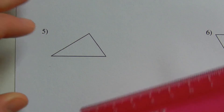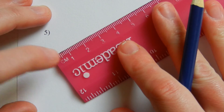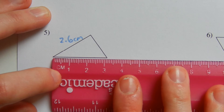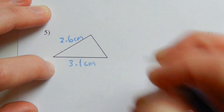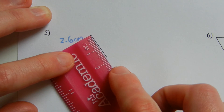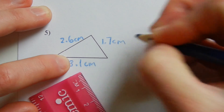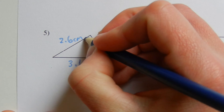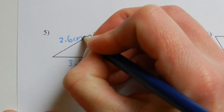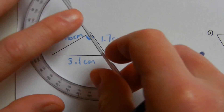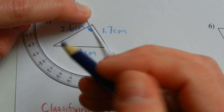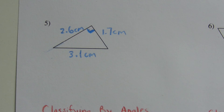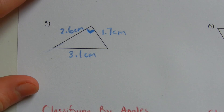For number five, measuring with centimeters, this first side is approximately 2.6 centimeters, the bottom side is approximately 3.1 centimeters, and this last side is approximately 1.7 centimeters. No sides have equal length, so this is a scalene triangle. Looking at this angle with the protractor, when you extend the line out it intersects 90 degrees — so it is a right angle. Since we have one right angle and no sides of equal length, this is a right scalene triangle.